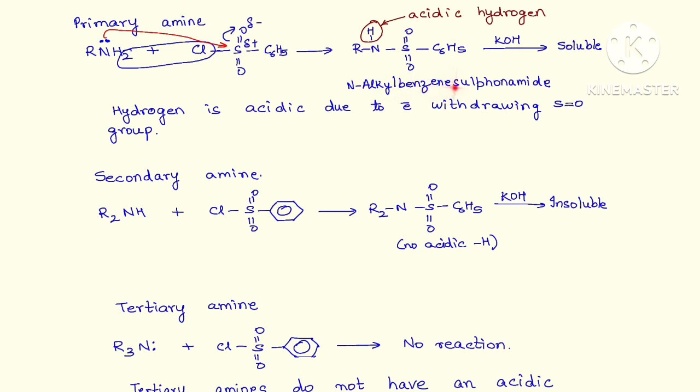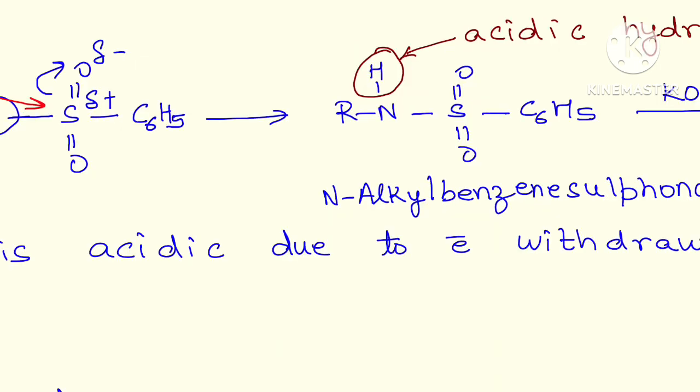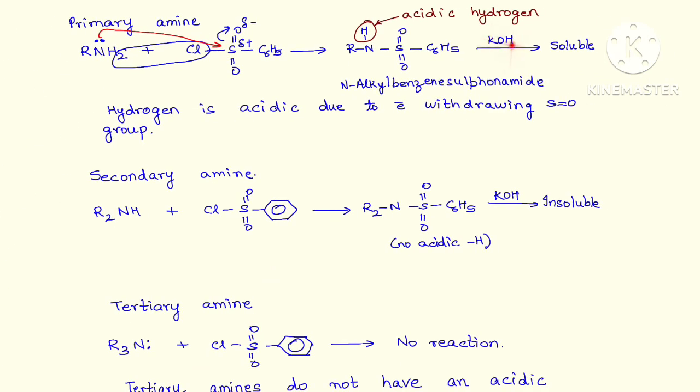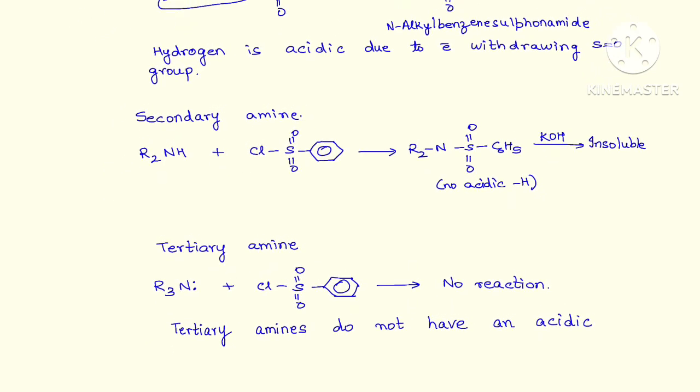So N-alkyl benzene sulfonamide. This still has an acidic hydrogen attached to the nitrogen. This hydrogen attached to the nitrogen is acidic, because of which it dissolves. The product formed dissolves in the alkali, so it's soluble. And why is it acidic?